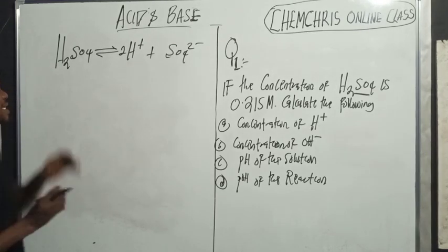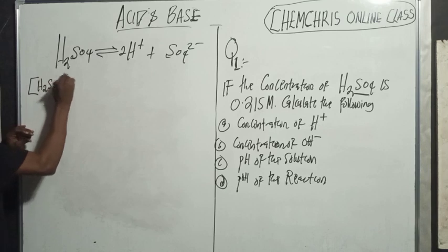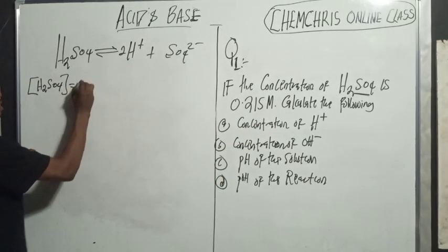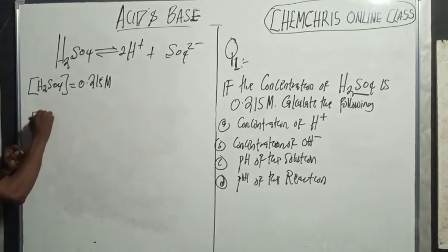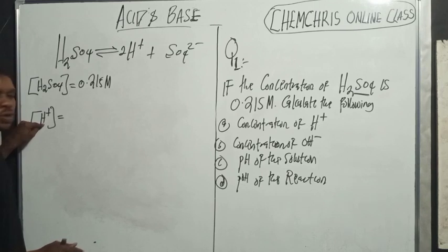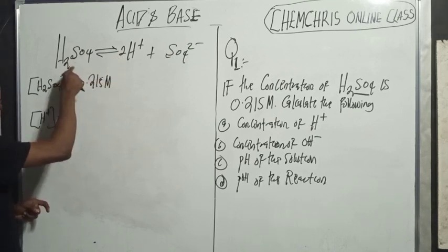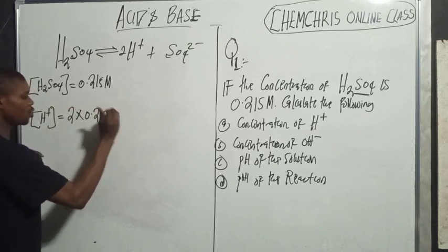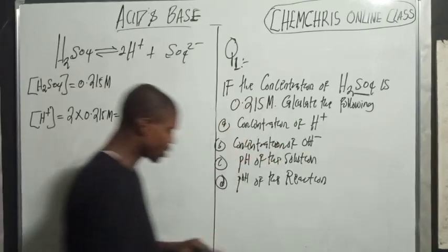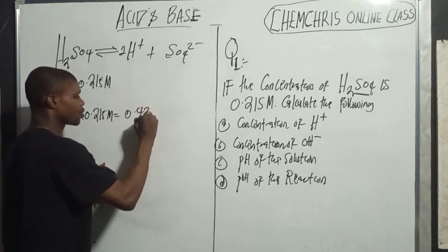From the ionic equation, I can get the concentration of H⁺. The concentration of H₂SO₄ was given as 0.215 molarity. Because there are two H⁺ produced per formula unit of H₂SO₄, the concentration of H⁺ is two times 0.215, which equals 0.43 molarity.